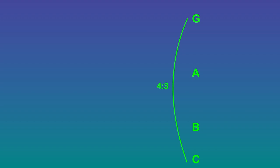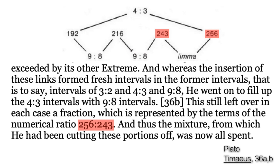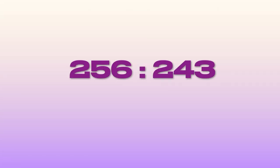He's filling the second half of the C scale between the notes of G and the next octave C. Between these notes, the demiurge is placing the notes of A and B a whole step apart, using the simple ratio of 9 to 8. However, the last interval between B and C is not a whole step. The ratio Plato uses for this semitone interval seems pretty bulky, 256 to 243. But it's the only ratio that will fit. As we read in Timaeus, this still left over a fraction, which is represented by the terms of the numerical ratio 256 to 243.